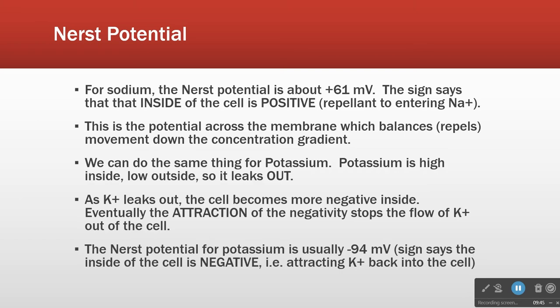Now let's switch over to potassium. Potassium's situation is different because it's high inside the cell and low outside. So potassium, if we open a channel on the membrane, is going to tend to leak out. What will stop it? The Nernst potential for potassium is very, very negative: minus 94.